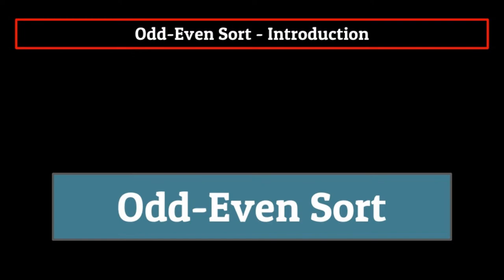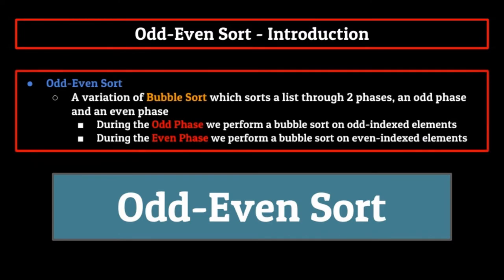What exactly is odd even sort? Well, by definition, odd even sort is a variation on bubble sort which sorts the list through two phases: an odd phase and an even phase. During the odd phase, we perform a bubble sort on odd indexed elements, and during the even phase, we perform a bubble sort on even indexed elements.